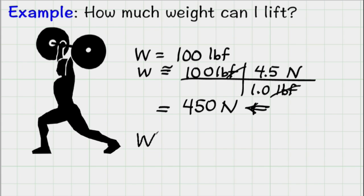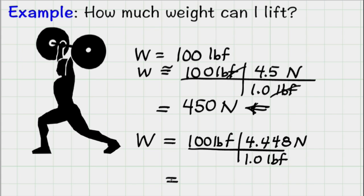If I want to do a more exact calculation, I can write this: 100 pounds force, and then one pound force is exactly the same as 4.448 newtons. Again, pound force cancels. 100 times 4.448 is 445 newtons to three significant figures.